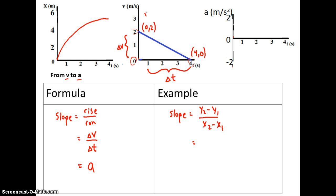So, x1, y1, x2, y2. 0, minus 2, all over 4, minus 0. So, this is telling us we have an acceleration of negative 1.5 meter per second squared. That's our slope. Slope is our acceleration.